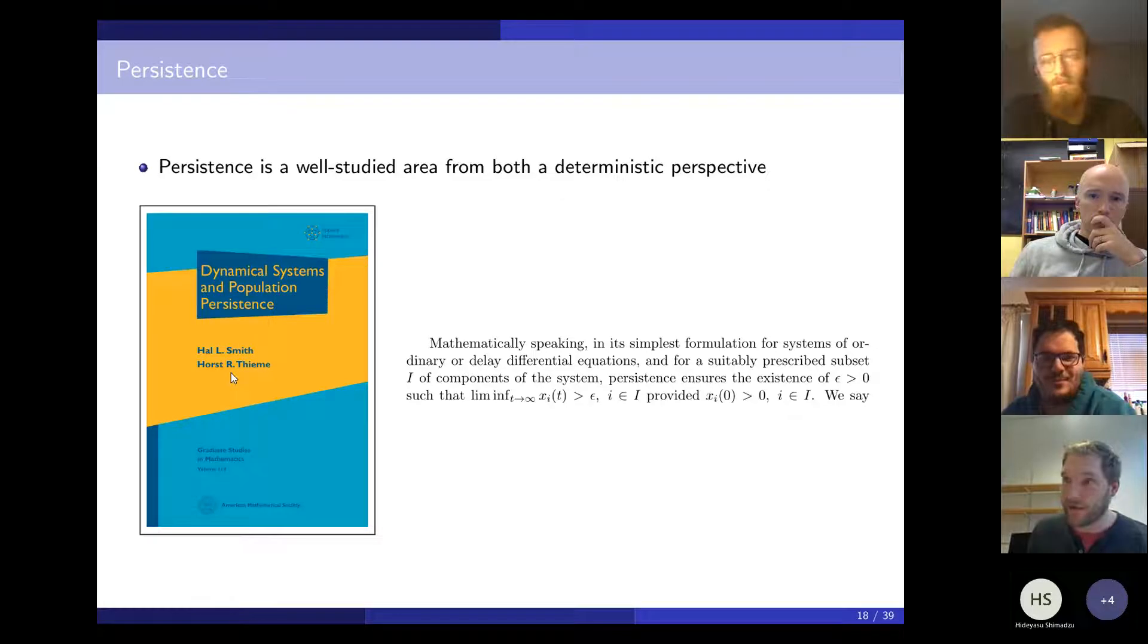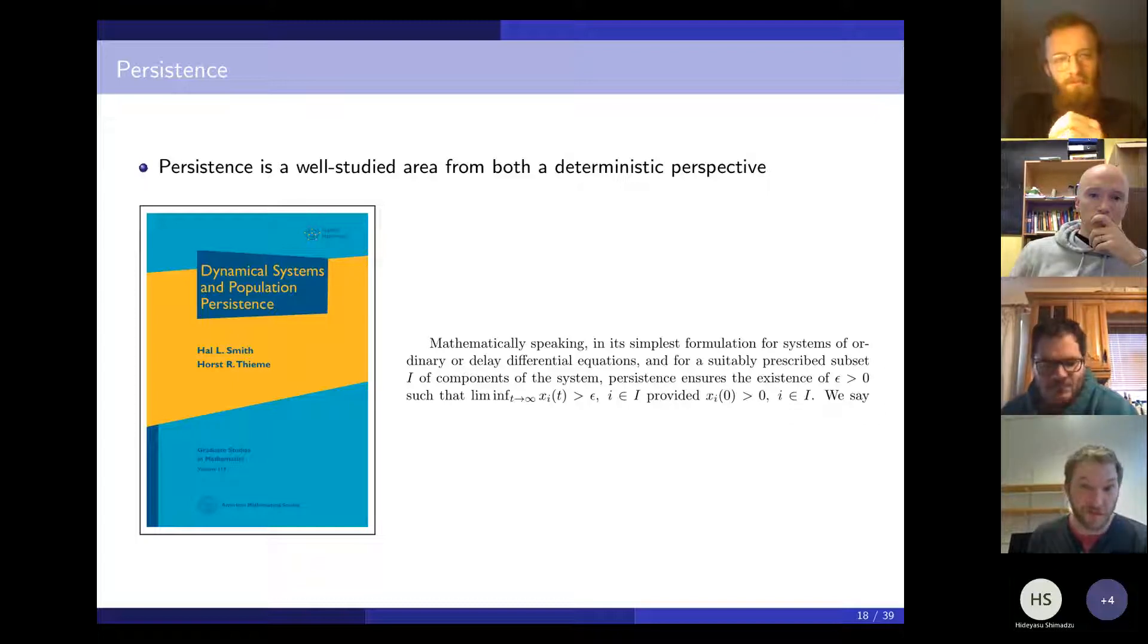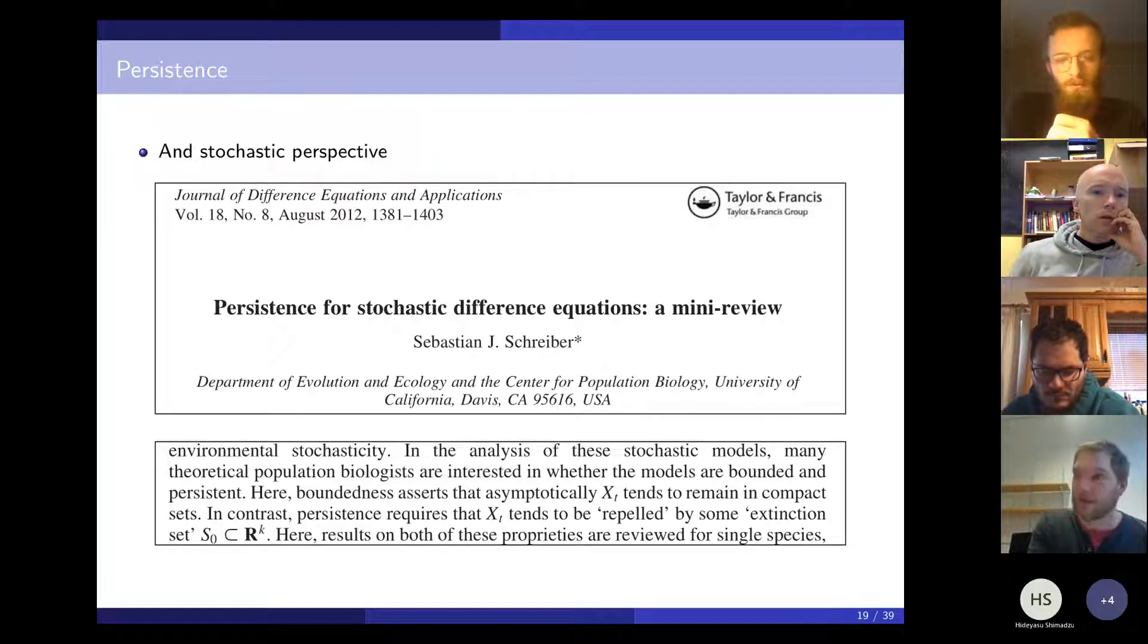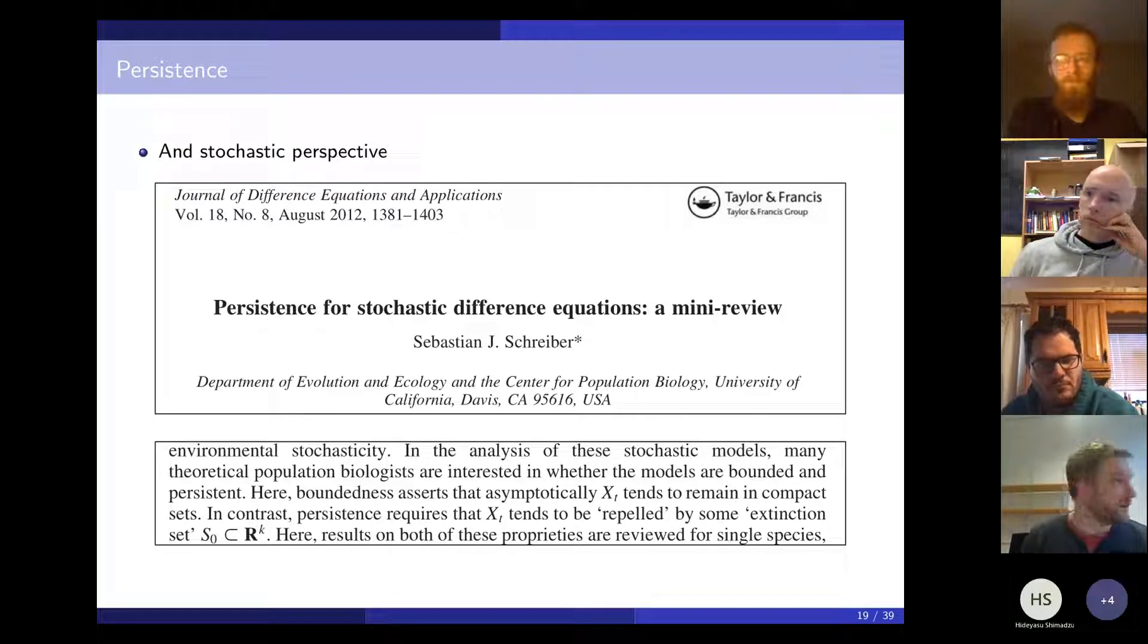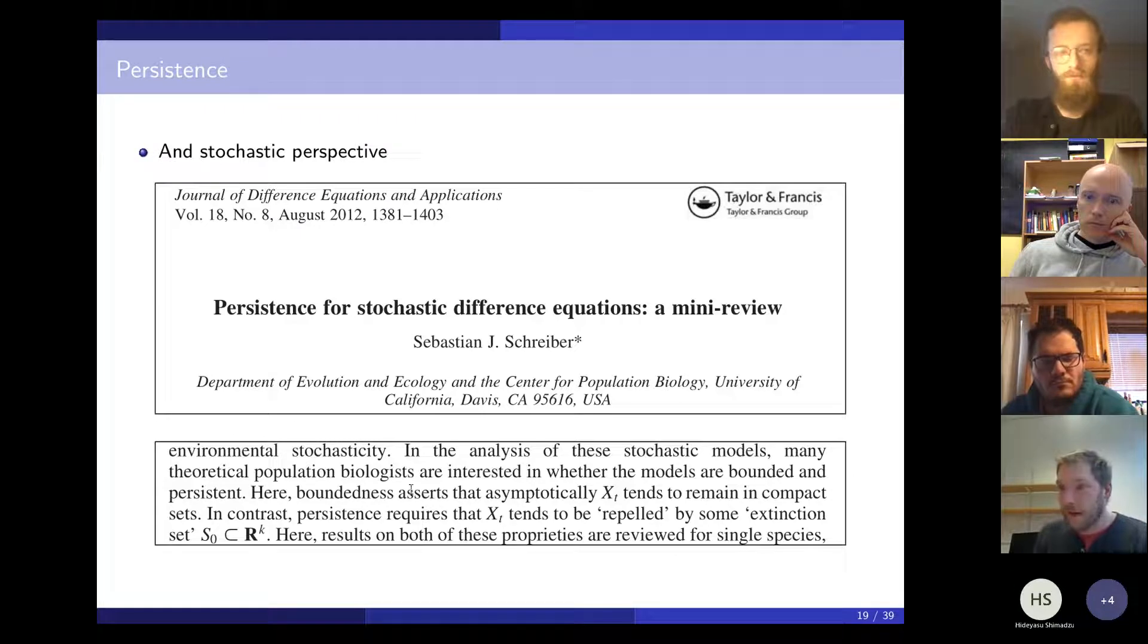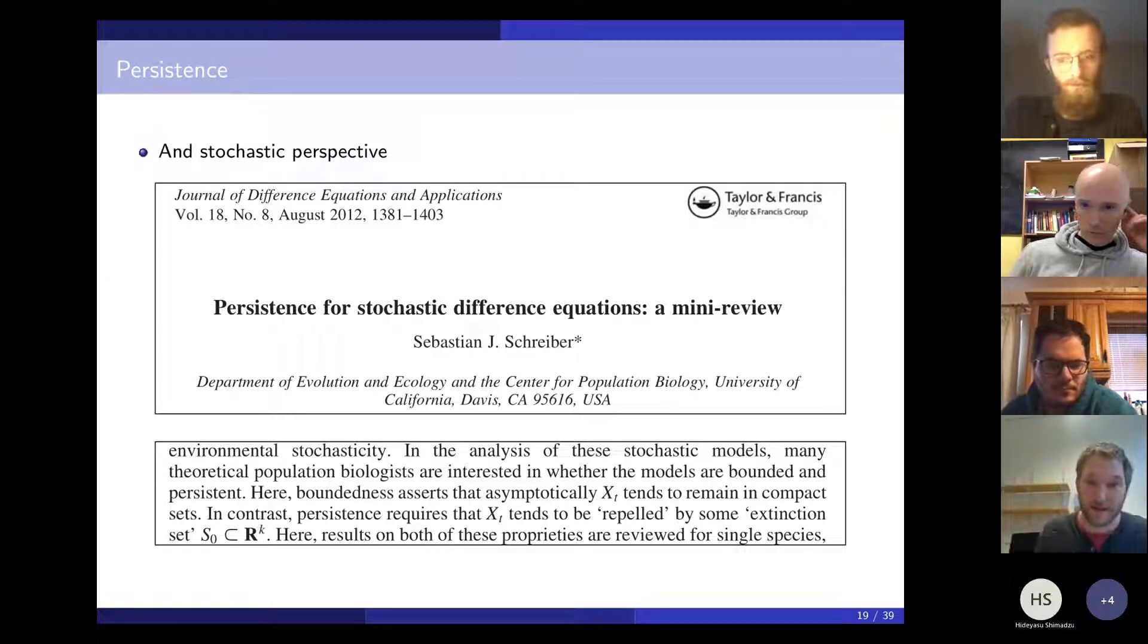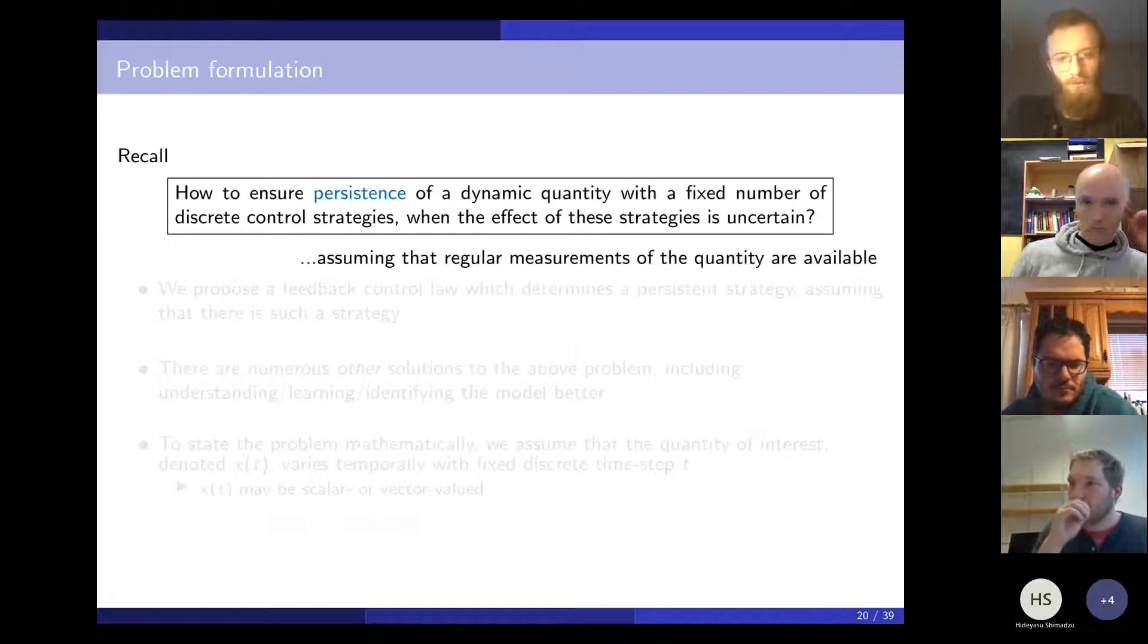In the present work, we sought to use ideas from so-called simple adaptive control theory for resource management. Resource management is a particularly dry term. What I'm referring to is something which is naturally non-negative and it changes over time. A population is an obvious example of that, but there might be others. For this present seminar, I'm thinking of populations. The present problem is how to ensure persistence of a dynamic quantity with a fixed number of discrete control strategies, when you're not certain what these control strategies do. Persistence is a mathematical term, but its meaning coincides with its common use meaning, which is the idea of persisting or not disappearing. Persistence is now a really well studied area in mathematical biology. This is a textbook by Hal Smith and Horst Thieme. These are really big fish in math bio—they're dynamical systems experts. Mathematically speaking, in its simplest formulation, we want the limit of something to be positive. It might fluctuate, it might be oscillating, but we want it to be bigger than zero. That's at the heart of what we mean by persistence. From a stochastic perspective, persistence is well studied. This is a review paper by Sebastian Schreiber at UC Davis. Persistence requires that x of t tends to be repelled by some extinction set—an idea of avoiding zero or avoiding some extinction set.